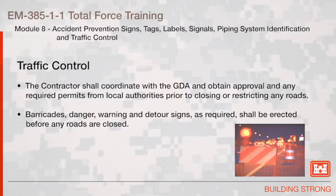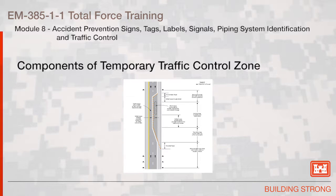Barricades, danger, warning, and detour signs as required shall be erected before any roads are closed. These are the components of a temporary traffic control zone. The first section is an advanced warning area, which tells traffic what to expect ahead. The second area is a transition area and it moves traffic out of its normal path, typically using cones to direct traffic into a single lane. The next area is the activity area, where the work actually takes place.